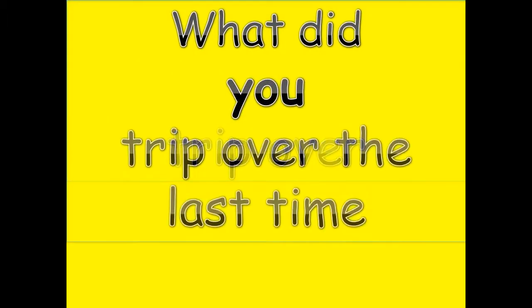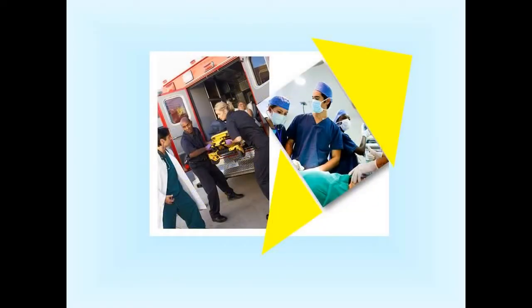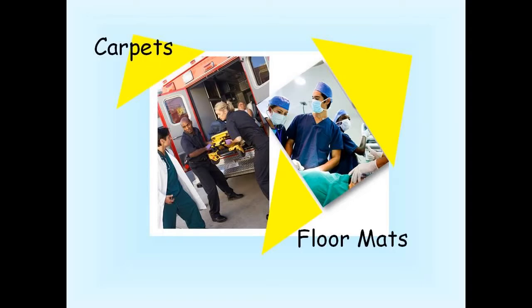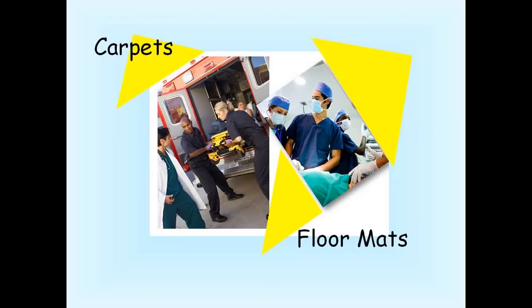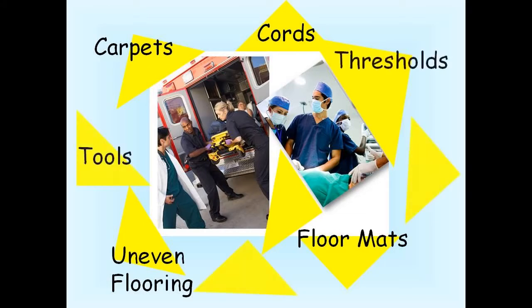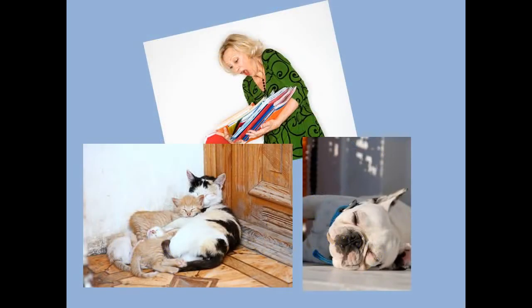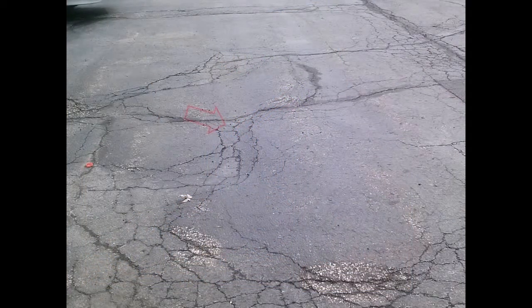What did you trip over the last time you fell? People tend to trip over things that we see all the time but don't normally notice — things like a slightly curled-up edge of a carpenter mat, extension cords, uneven walking surfaces like cracks in sidewalks or other walking surfaces, thresholds in doorways, tools, even those cute little pets snoozing in doorways cause hundreds of falls every day.